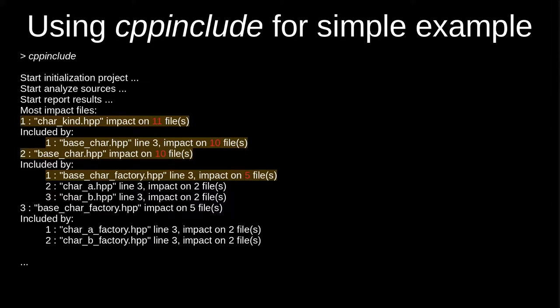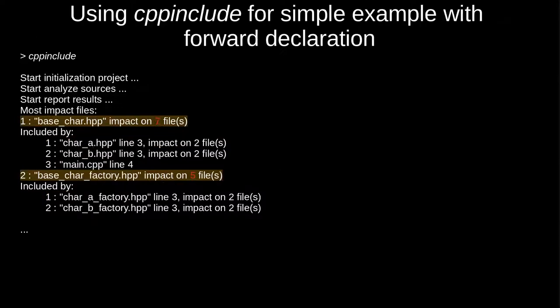Tools like cpp-include help detect files that impact a lot of other files. You can see the file with the enum impacts 11 files because it's included by the base class header, which impacts inherited classes and base factories. If we run the tools on the same example with forward declarations, we see that the most impacted file is now the base class, impacting only inherited classes and the main file.